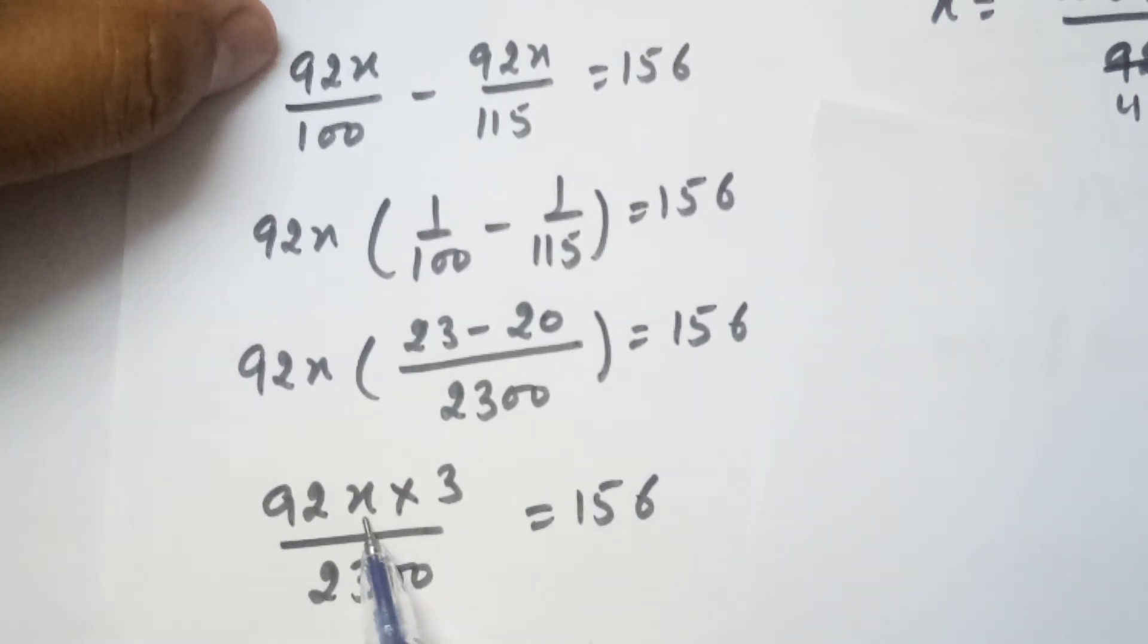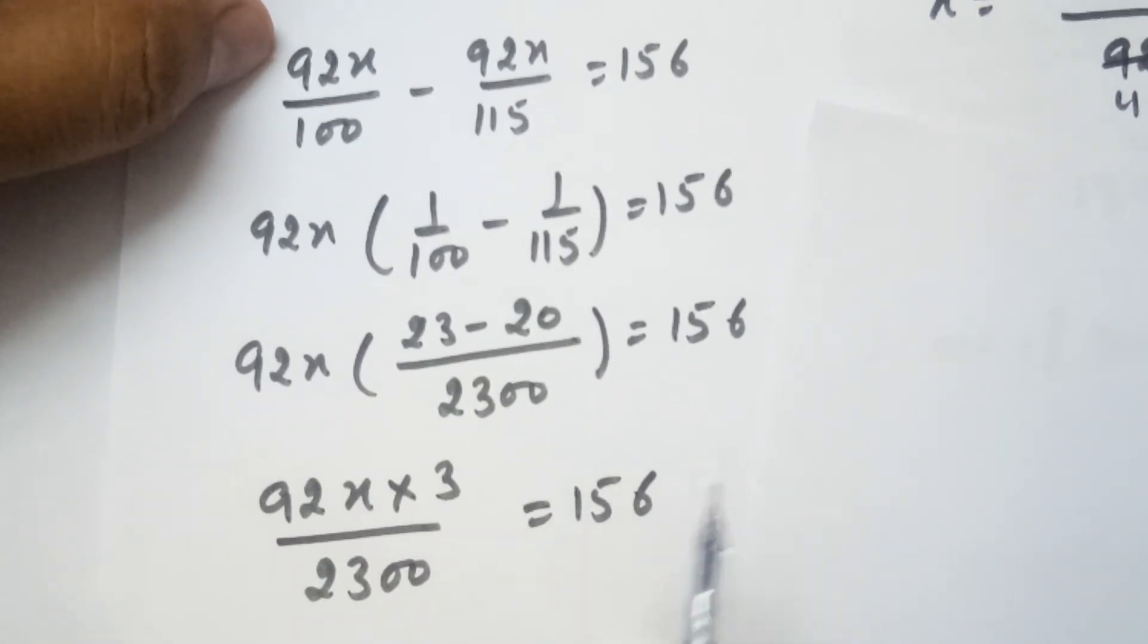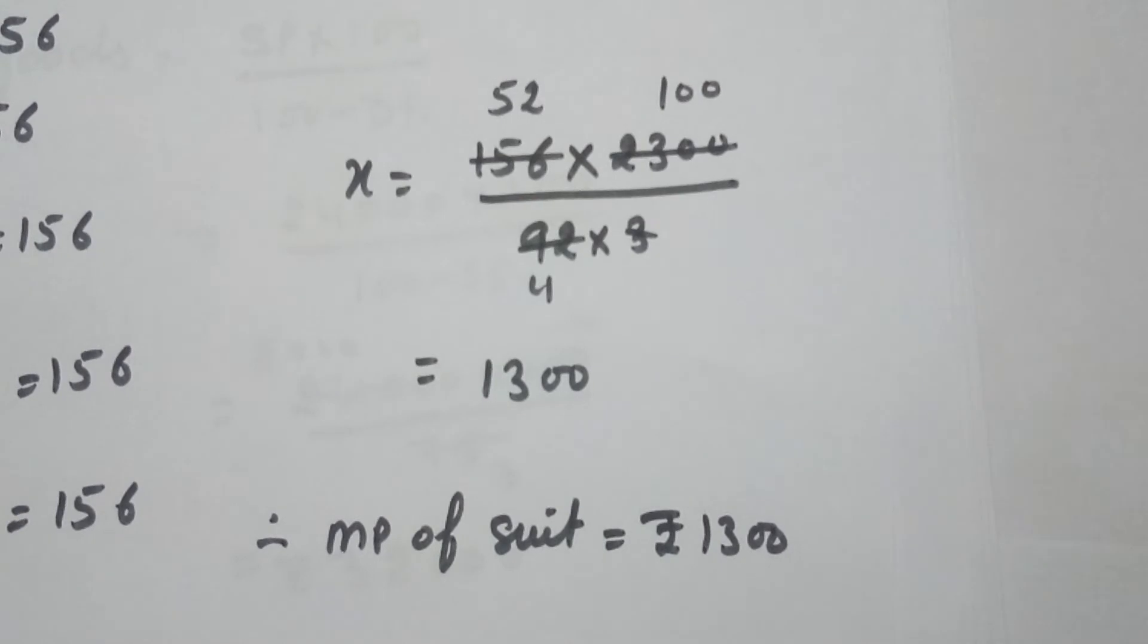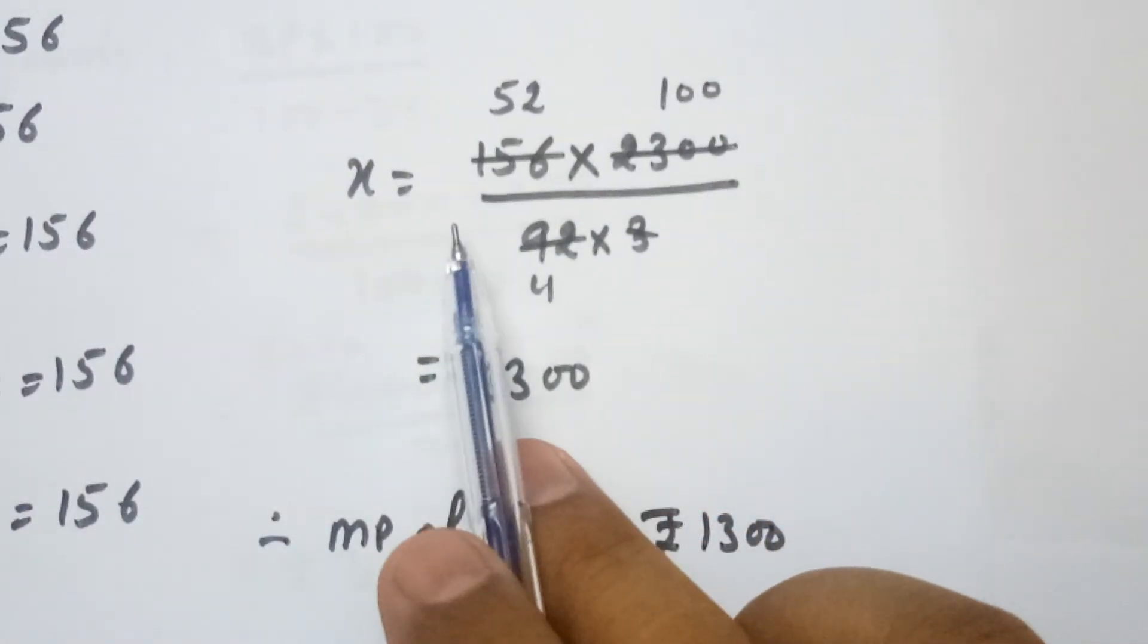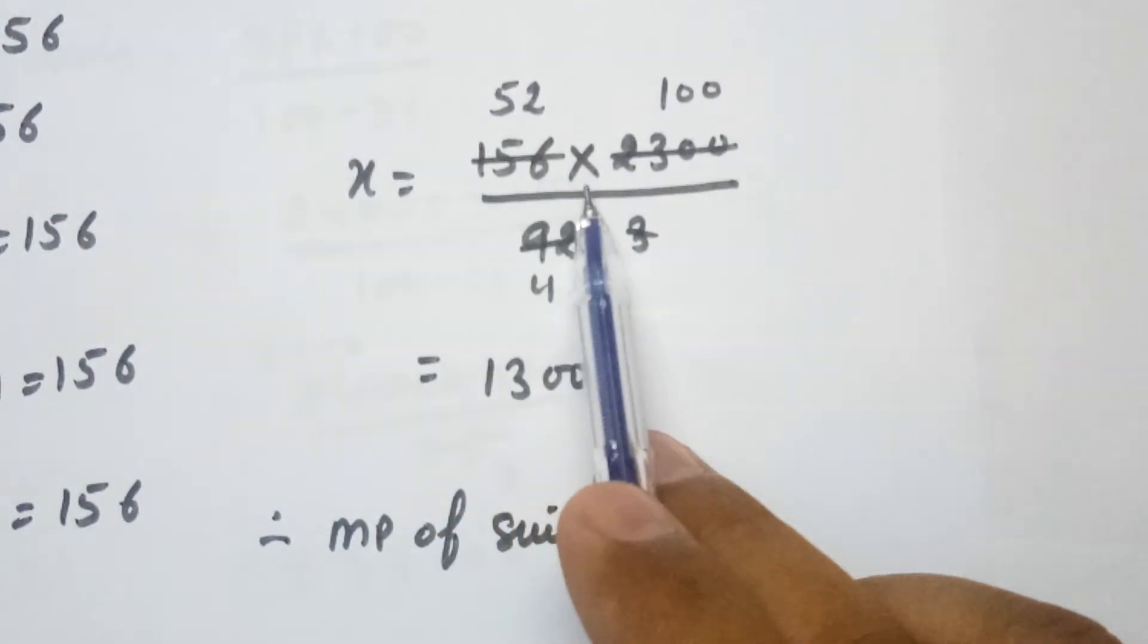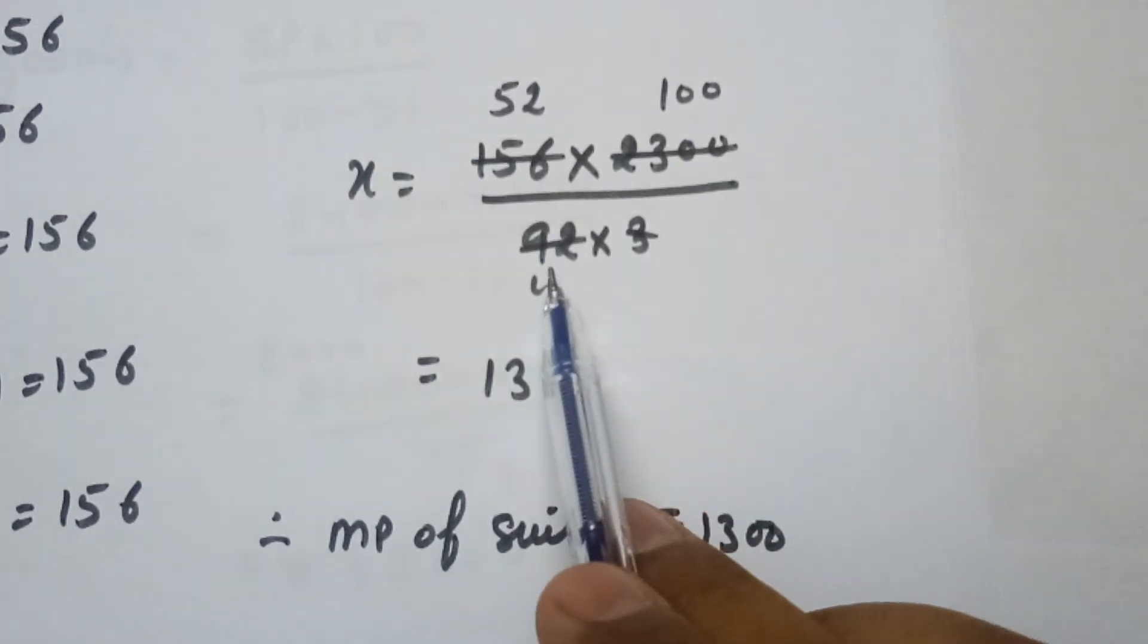Now we will keep X here and take all the numerical values to the right hand side. X becomes 156 times 2300 over 92 times 3.